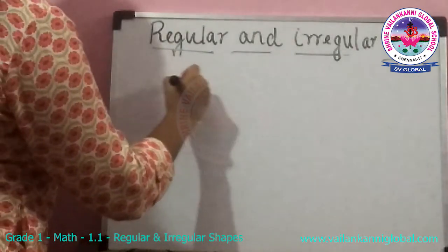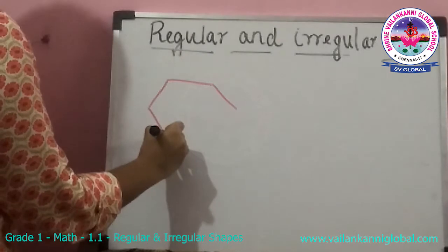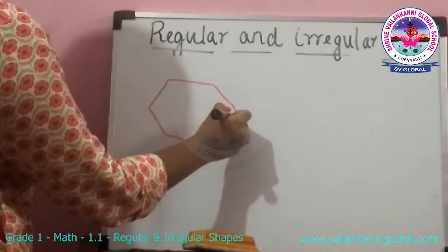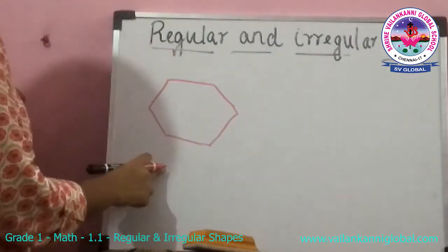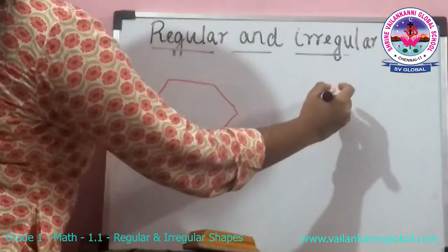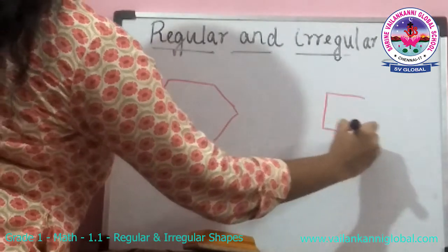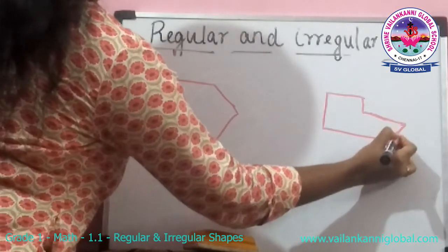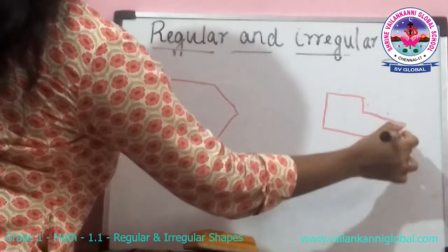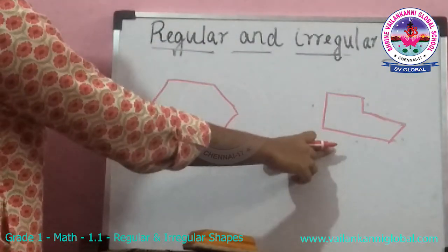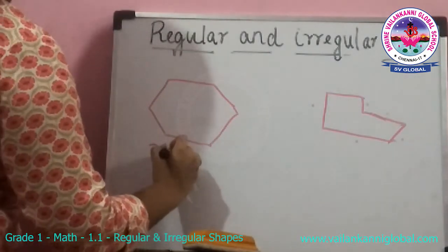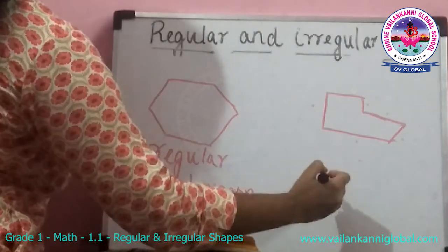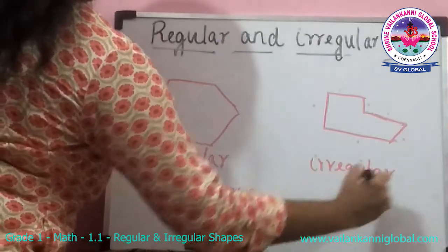Now I am going to draw a hexagon. This hexagon — all the sides are equal, so it is a regular hexagon. Whereas, you can also draw like this. Here also, you see the sides: 1, 2, 3, 4, 5, 6 — here also there are six sides, but it is not a regular hexagon. So this you can call it as a regular hexagon, whereas this one you can call it as an irregular hexagon.